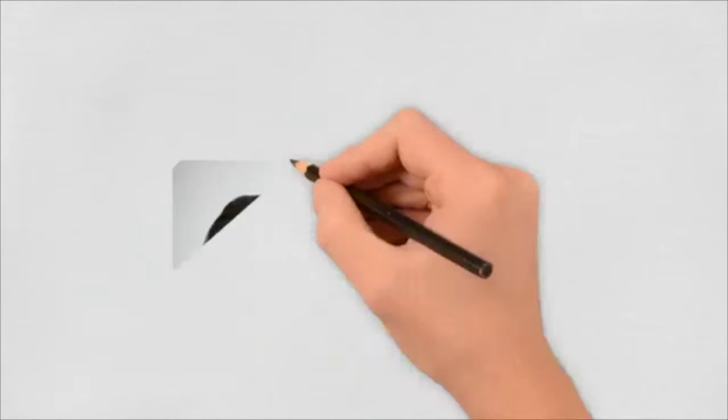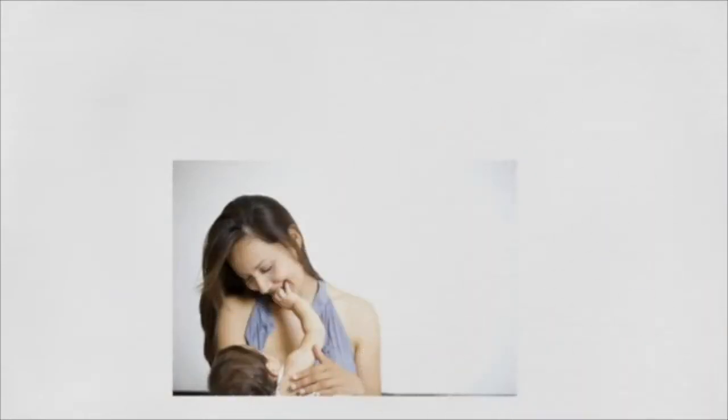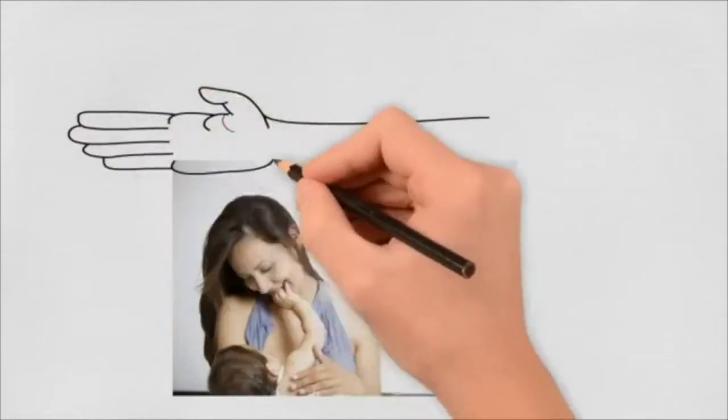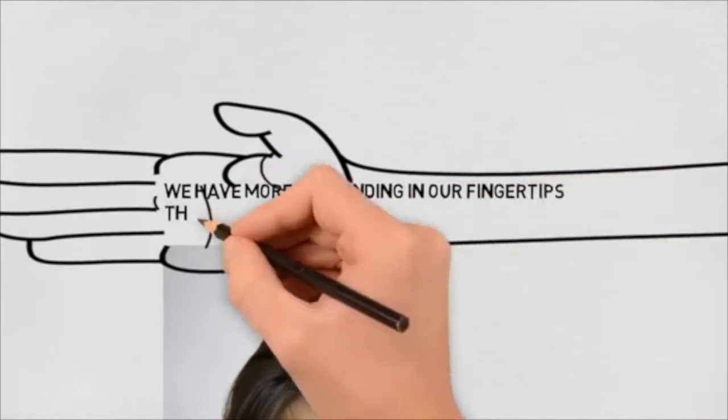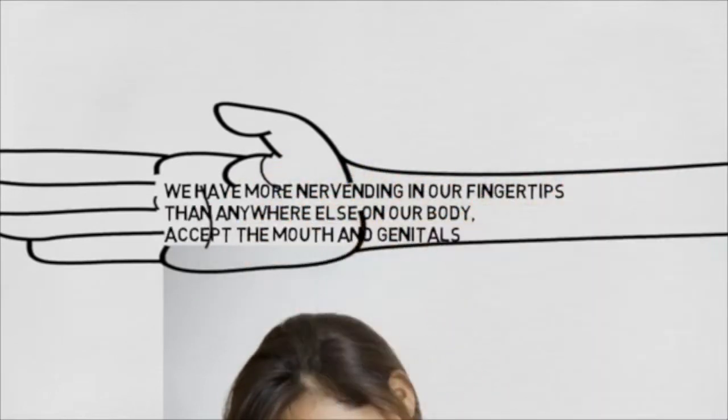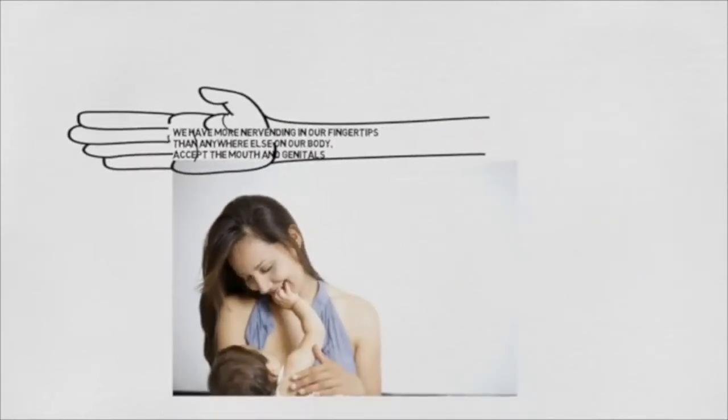From early age, since we were little, we are reaching out to choose to touch something or somebody. Because we have more nerve endings in our fingertips than anywhere else in our body, except our mouth and our genitals.